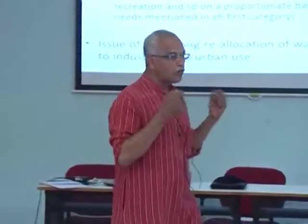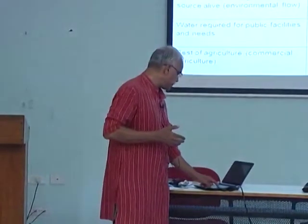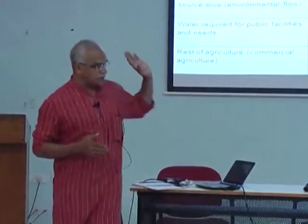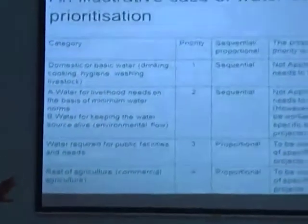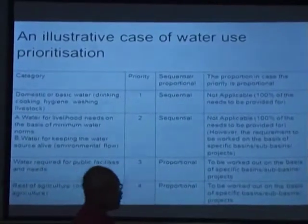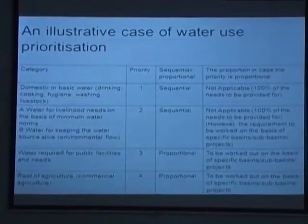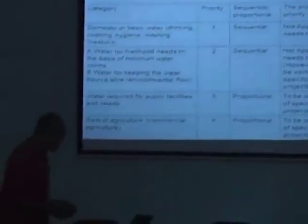I am not arguing that there should be no reallocation — that is not the case. The reallocation issue is about what form we do it in, and I will come back to industrial water use. In Maharashtra we have tried to work out a very detailed exercise on how a different system of water prioritization can work and how we should plan ideally — domestic and basic water first as sequential, water for livelihoods and ecosystem at the same level also sequential, and then public facilities, commercial agriculture with a different approach.